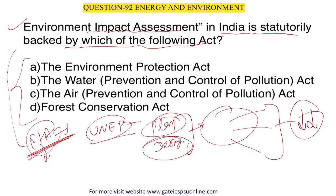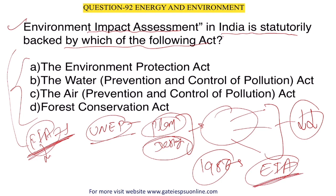If something harmful is identified, it is reduced at the planning and designing stage — that is EIA. In India, the Environmental Protection Act was created in 1986, and EIA was added under it. Every year, one or two questions are asked from EIA. The answer is the Environmental Protection Act 1986.